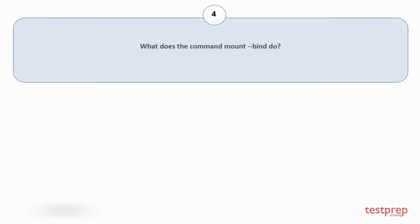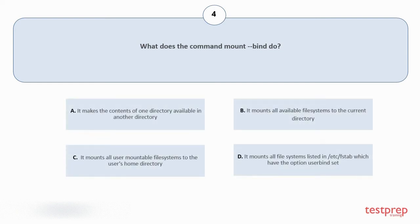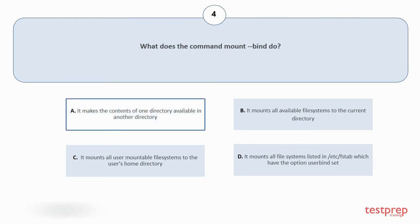Question number 4: what does the command mount --bind do? Your options are: a. It makes the contents of one directory available in another directory. b. It mounts all available file systems to the current directory. c. It mounts all user-mountable file systems to the user's home directory. d. It mounts all file systems listed in fstab which have the option user bind set. The correct answer is option A.